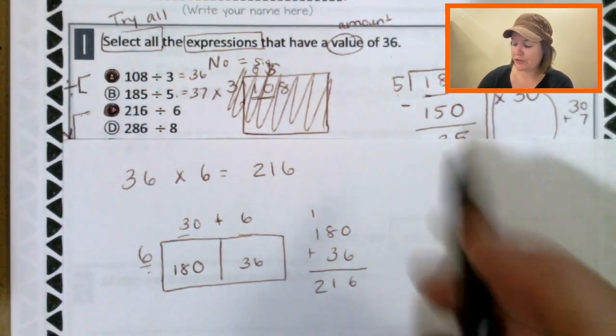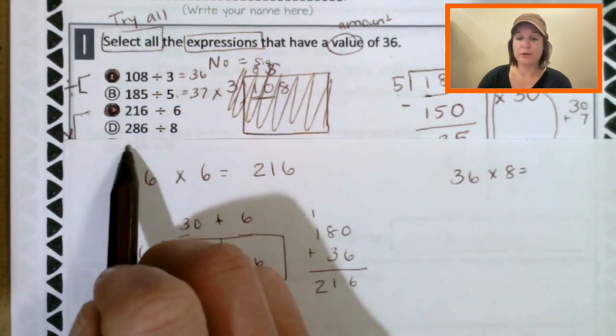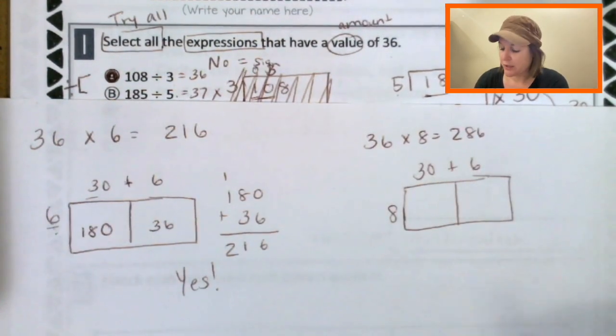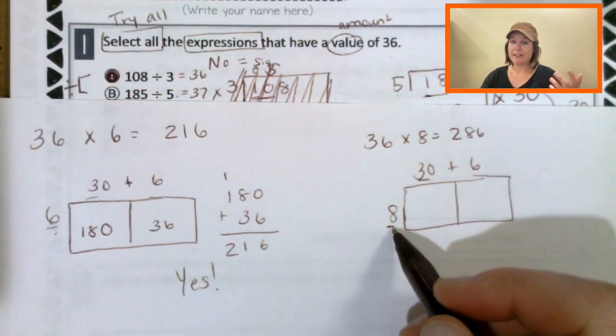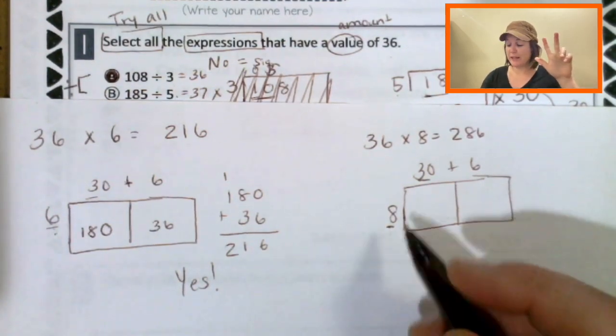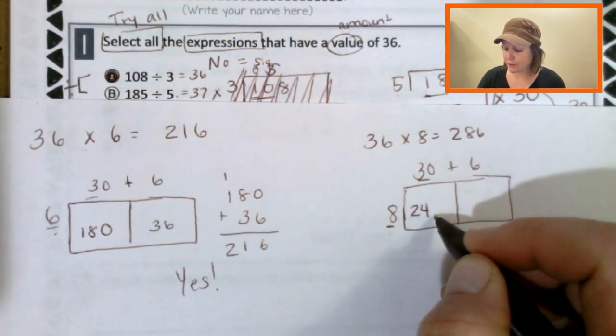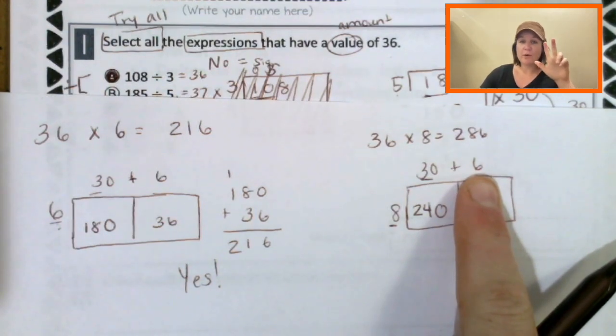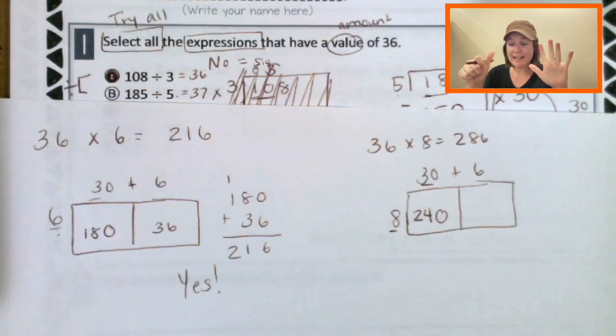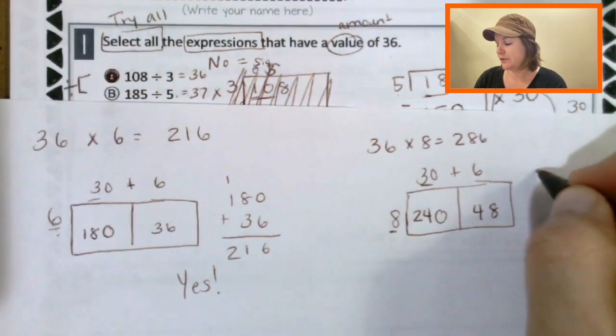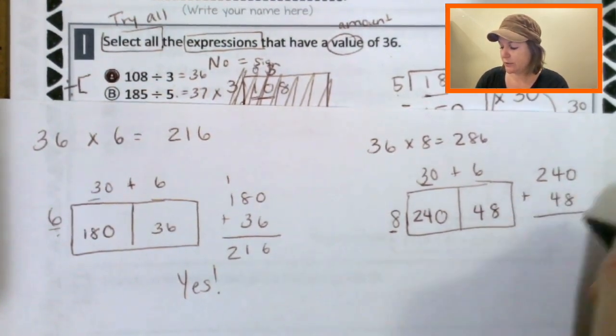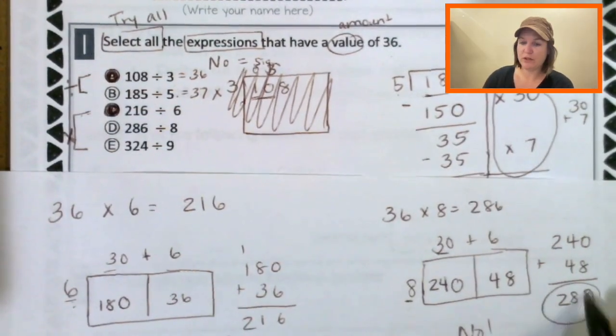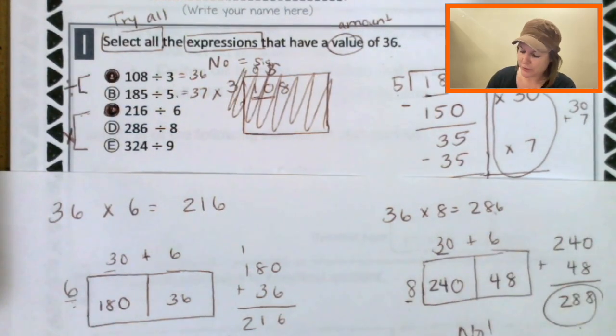Let's try D. So that would be 36 times 8. Does that equal 286? Let's do the area model again. So 8 times 3 is party rocking with the 8s for sure. 8, 16, 24. And then we need 1, 0. And now 8 times 6. 8, 16, 24, 32, 40, 48. And now we join them together. So 240 plus 48 equals 288, which is super close, but not quite. No, because we have 288 there and 286. Close, but no.